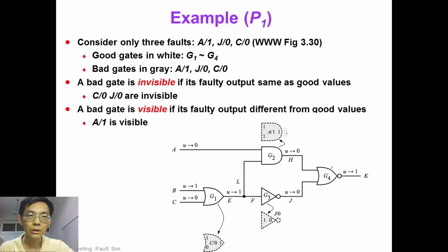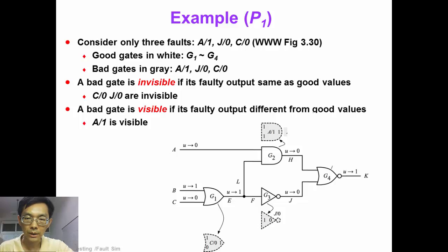Now consider three faults in this circuit: A stuck at one, J stuck at zero, and C stuck at zero. The good gates are painted in white in this figure, and the bad gates are painted in grey.